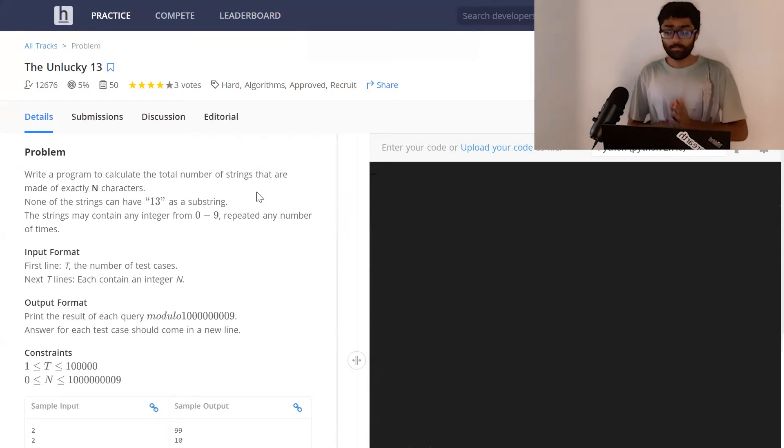Let's have a look at the problem Unlucky 13. Write a program to calculate the total number of strings that are made up of exactly n characters. None of the strings can have 13 as a substring, and the strings may contain any integer from 0 to 9, repeated any number of times.